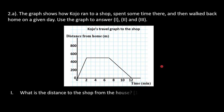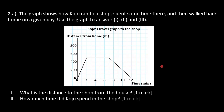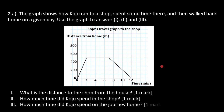The first sub-question asks: what is the distance of the shop from the house? That's one mark. The second asks: how much time did Kojo spend in the shop? That's also one mark. The third asks: how much time did Kojo spend on the journey home? That is also one mark.